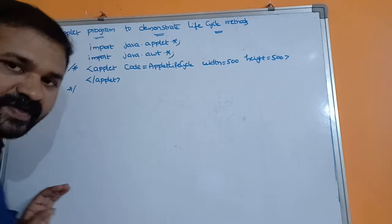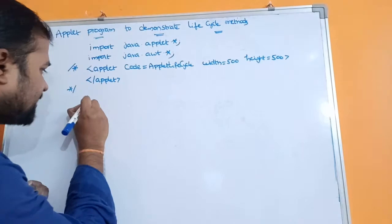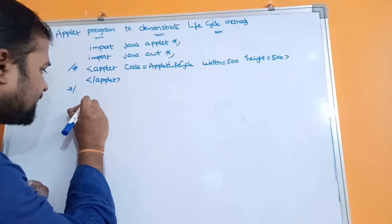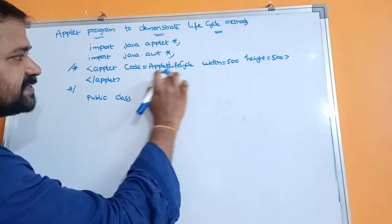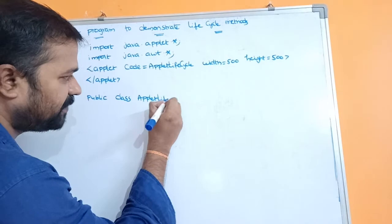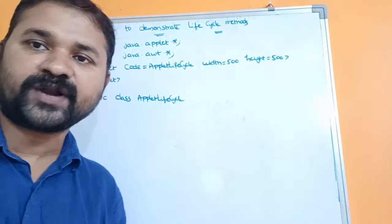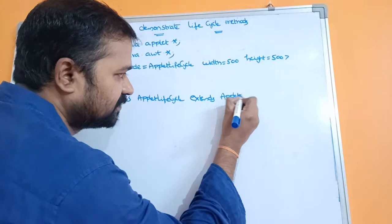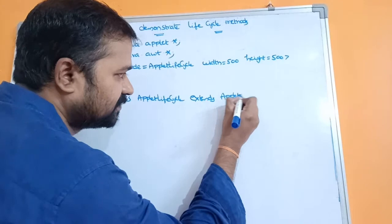Next we have to create the class which extends the applet class. The access specifier must be public, so: public class AppletLifeCycle. If you want to create any applet program, then we have to create a class that extends the applet class. The applet class is present in the applet package.